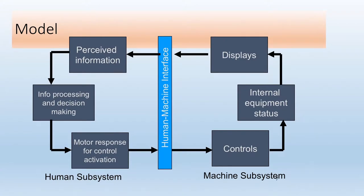This is a very common model we're using here. We've looked at it from both sides — the human side, where you have perception and action, and the machine side, which shows that the machine does something, has controls, and displays information back to the user, which becomes input to the user and then produces an action.